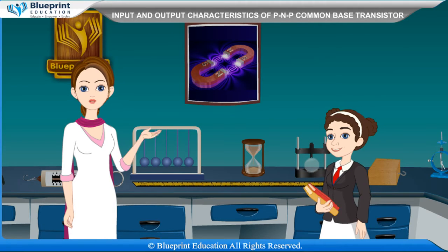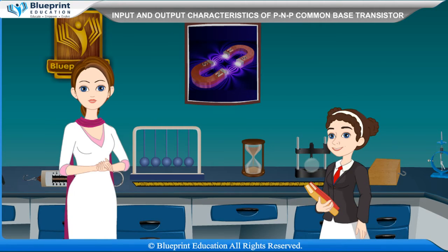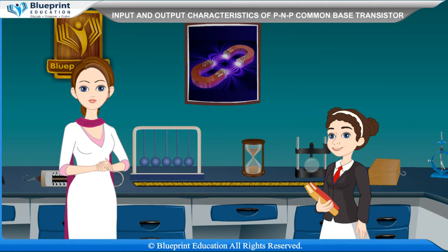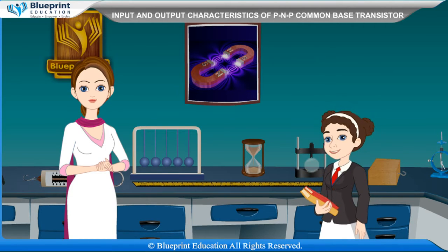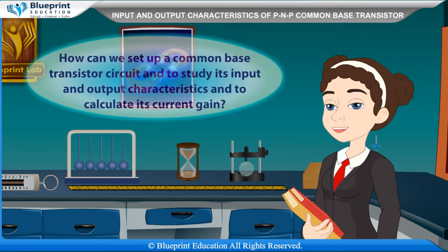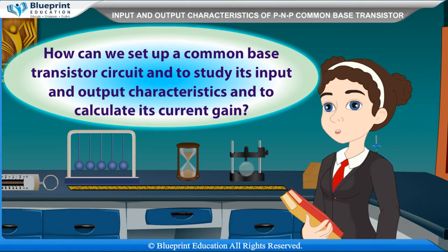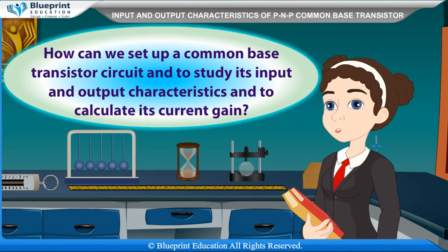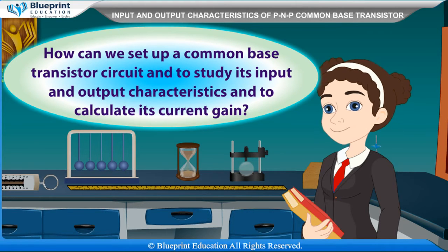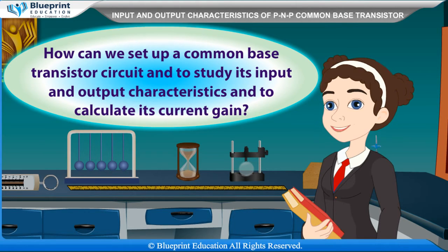A transistor works as switched off in its cut-off region and works as switched on in its saturation region. The question is: how can we set up a common base transistor circuit and study its input and output characteristics and calculate its current gain?